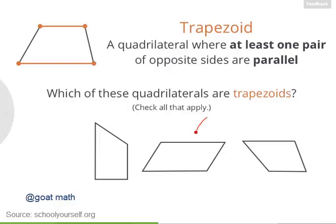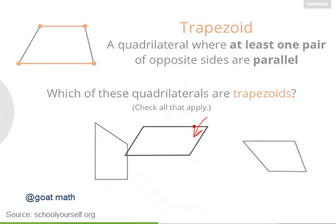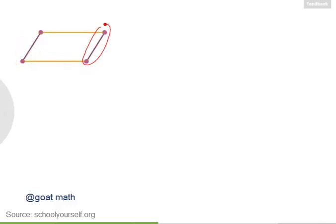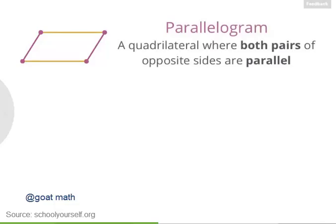Let's take a closer look at this trapezoid. This is a special kind of trapezoid. This pair of opposite sides are parallel, and this other pair of opposite sides is also parallel. So this trapezoid is known as a parallelogram, which is the name for any quadrilateral where both pairs of opposite sides are parallel.